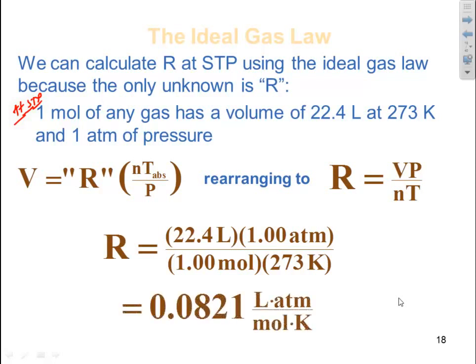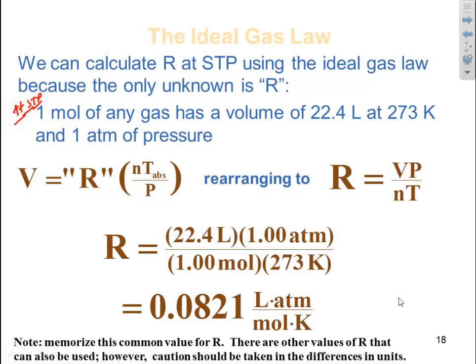Multiply that out, no units will cancel, so I get all the units come with my proportionality constant of R: 0.0821 liter atmospheres per mole Kelvin. Memorize this common value for R. There are other values of R that can be used, however, caution should be taken in the differences in units. You've got to make sure that your units cancel.